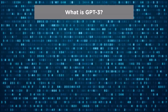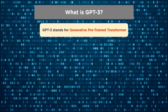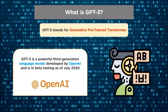Let's begin by looking at what is GPT-3. GPT-3 stands for Generative Pre-Trained Transformer. It is a powerful third-generation language model developed by OpenAI, which is an artificial intelligence company based out of San Francisco, California. GPT-3 beta testing began in July of 2020. It can easily understand your problems and generate human-like texts in a matter of seconds.